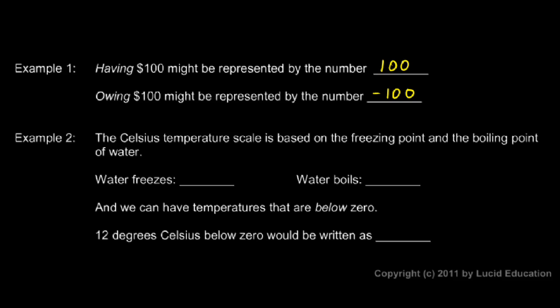Example number two. The Celsius temperature scale is based on the freezing point and the boiling point of water. Water freezes at zero degrees Celsius. This little circle typically means degrees. And then water boils at 100 degrees Celsius. Now, we can have temperatures that are below zero, colder than the freezing point of water. So, 12 degrees Celsius below zero would be written as negative 12 degrees Celsius.